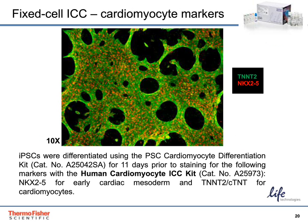This slide shows characterization of cardiomyocytes using the human cardiomyocyte ICC kit. Induced pluripotent stem cells were differentiated using the PSC cardiomyocyte differentiation kit for 11 days prior to staining. The cells were then fixed and stained for two key cardiomyocyte markers: NKX2.5 for red fluorescence and TNNT2 or cTnT for green fluorescence. The kit comes with reagents sufficient to stain 50 samples using a 200 microliter staining volume, enabling acquisition of beautiful multiplexed images using commonly available blue-green and orange-red filter sets.